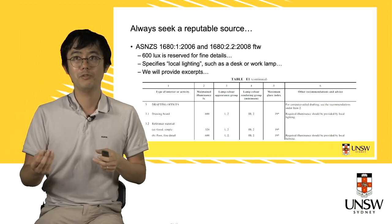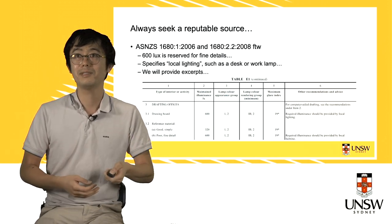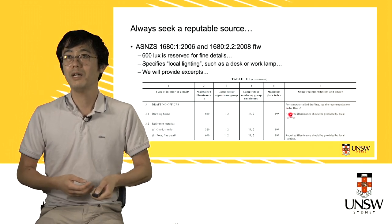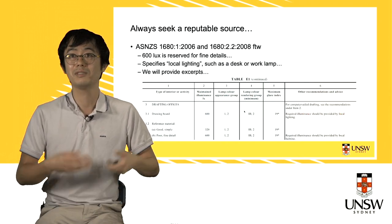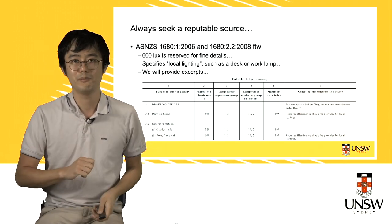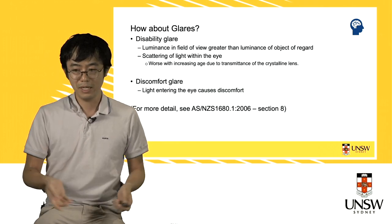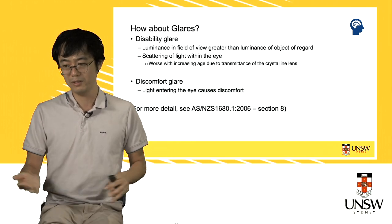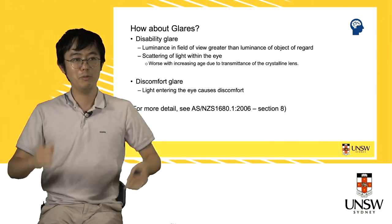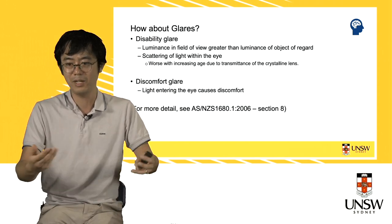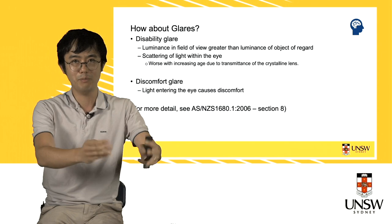Anything above 600 lux is reserved for fine detail tasks. As per the standard, high levels of illuminance — around 600 lux or more — should be provided by local lighting, meaning task lights. So if you want more light and need something like 600 to 700 lux, think about a desk lamp or something similar.